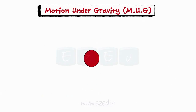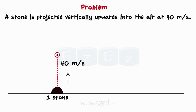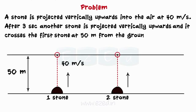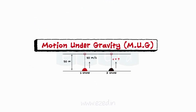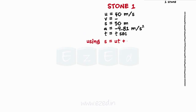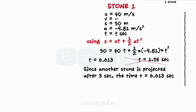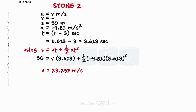Consider a stone projected vertically upwards into the air at 40 meters per second. After 3 seconds, another stone is projected vertically upwards and it crosses the first stone at 50 meters from the ground. What is the velocity of projection of the second stone? Consider motion of stone 1, write initial conditions, and using the uniform acceleration equation, substituting values gives a quadratic equation. Solving it gives two values of time, of which one is valid. Since another stone is projected after 3 seconds, time t1 is valid. Similarly, writing the initial conditions for stone 2 and evaluating gives the velocity of projection of the second stone.